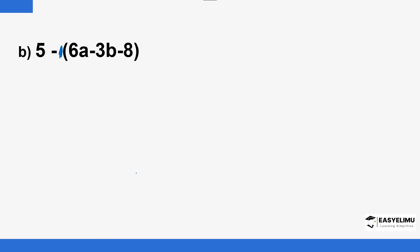Now we have the second example. There is no number before the bracket here. The number outside the bracket is supposed to multiply all the terms inside, but if you can't see a number there, the interpretation is that it is 1. So you start with 5, then minus — because there is a minus sign before the bracket, all the signs inside will change to their opposites. So 1 times 6 is 6a, and the minus changes to plus; then 1 times 3 is 3b, and again the minus changes to plus.